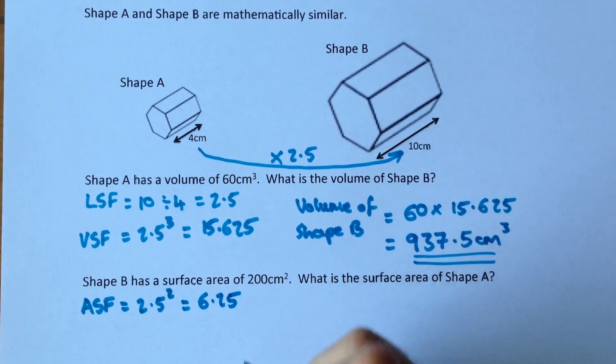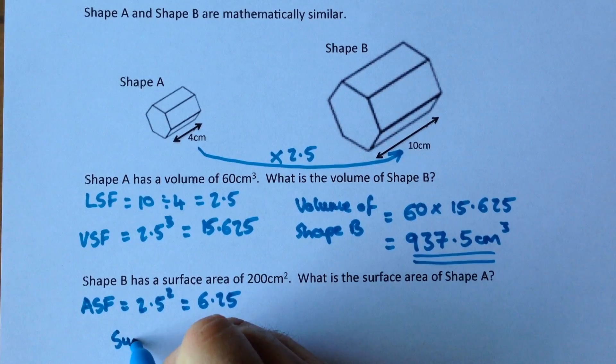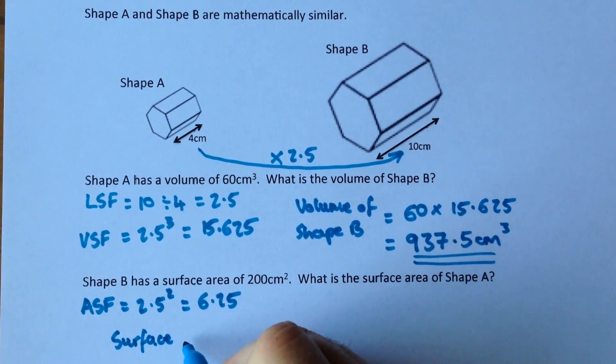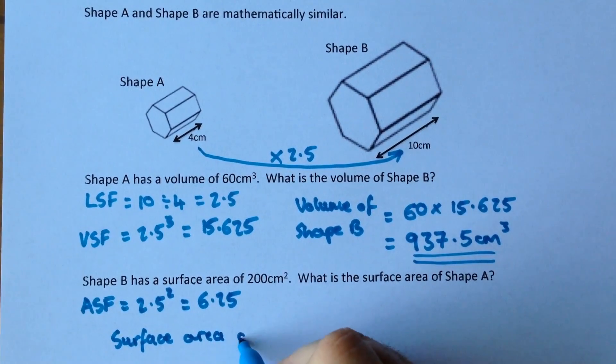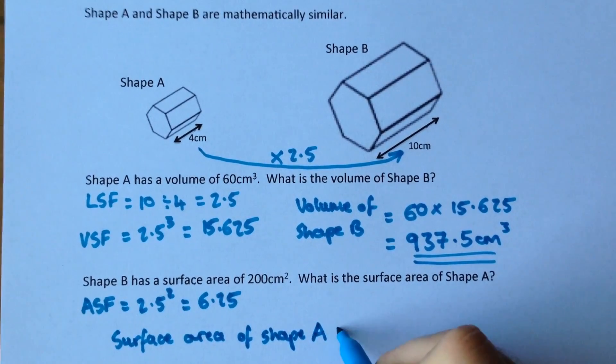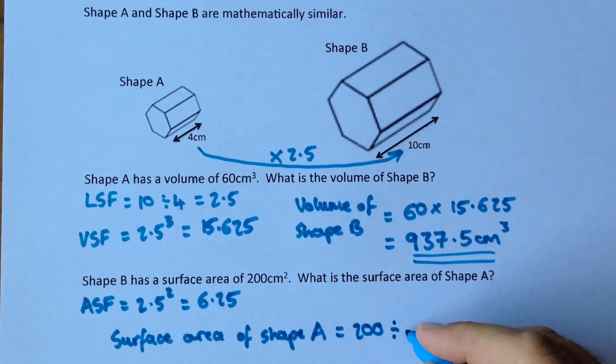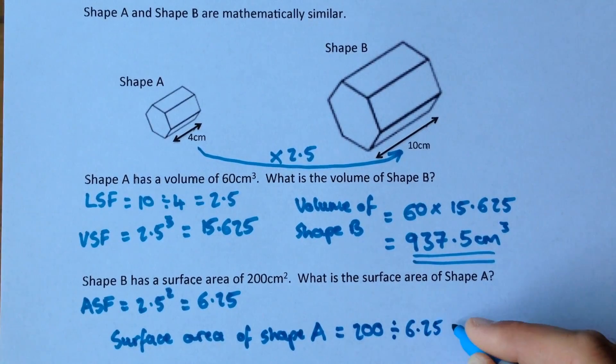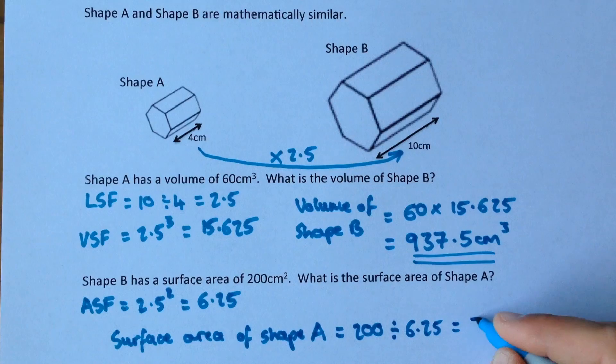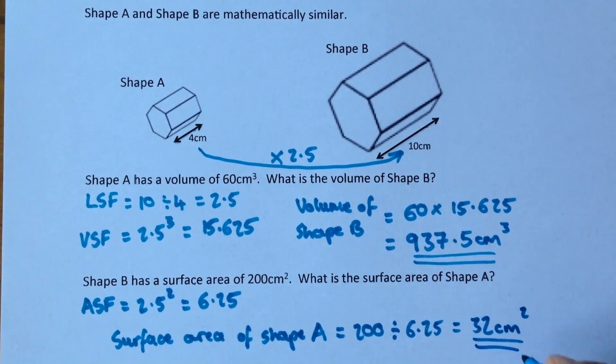So now surface area of Shape A equals 200 divided by 6.25, which gives us an answer of 32cm².